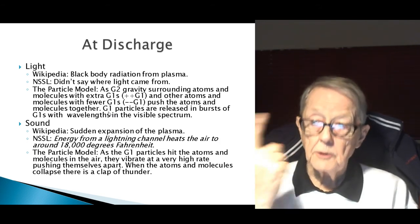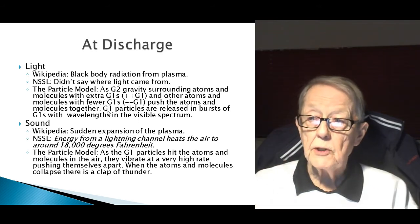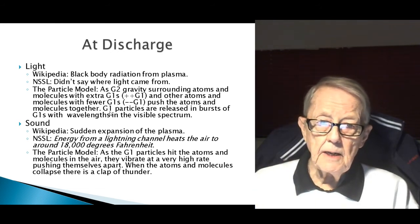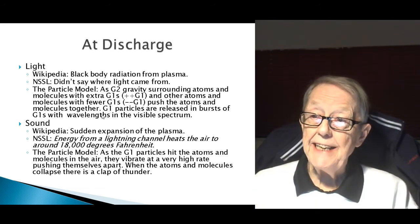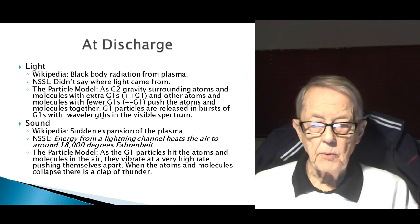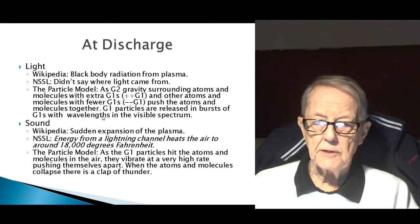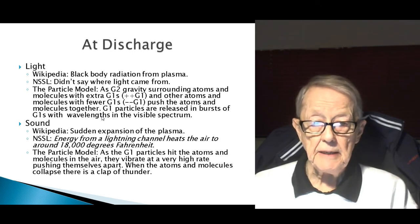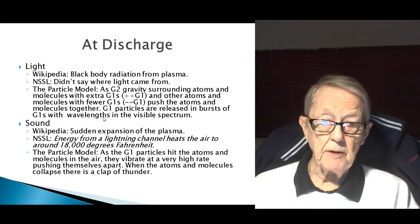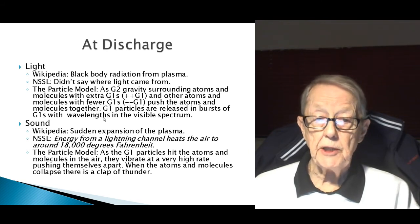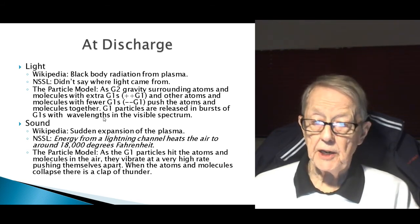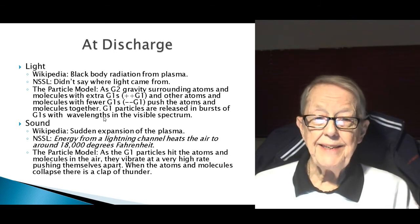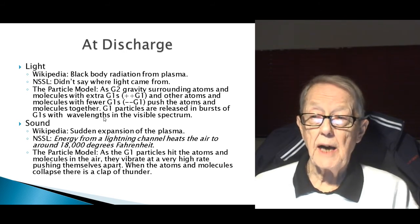You have the G1 orbitals moving around and around; you don't know which direction they're going when they hit — they scatter. After you see the lightning, you hear it. Wikipedia says it's the sudden expansion of plasma. The National Severe Storm Laboratory says the energy from the lightning channel heats the air to around 18,000 degrees Fahrenheit — that's how hot it gets. It's amazing.